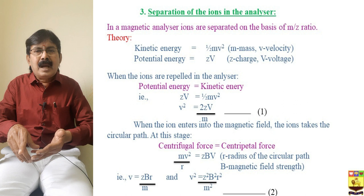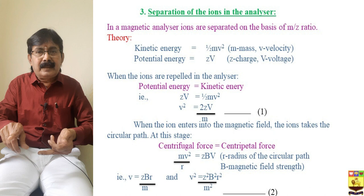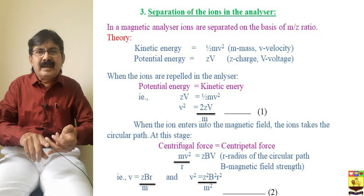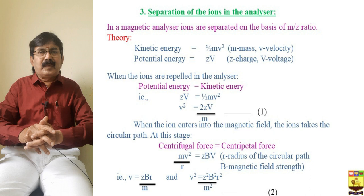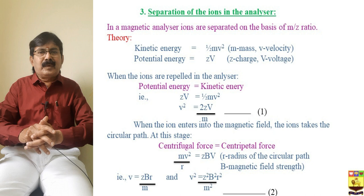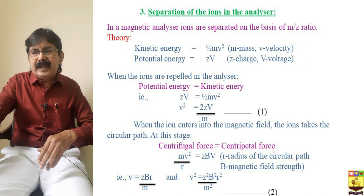When the ion enters the magnetic field it takes a circular path. Any molecule on a circular path has two forces: centrifugal force and centripetal force. The centripetal force is given by mv²/r, which equals zBv, where r is the radius of the circular path and B is the magnetic field strength. Using this equation, we get v² = z²B²r²/m². Equating this (equation 2) with equation 1, we get m/z = B²r²/2V.